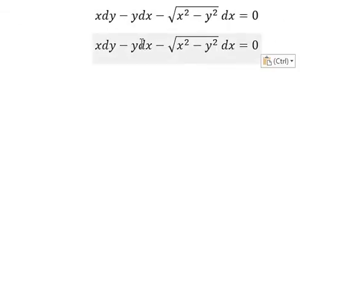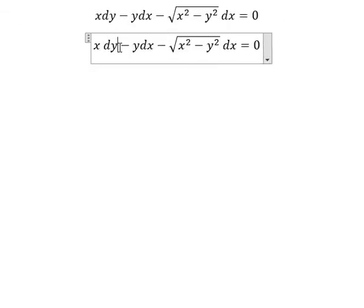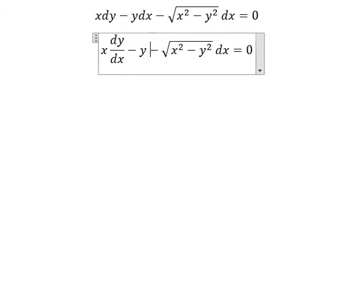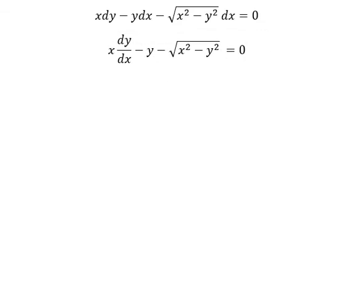We divide both sides by dx. We have x, y, x squared, y squared under the square root. This is a degree 1 homogeneous equation.